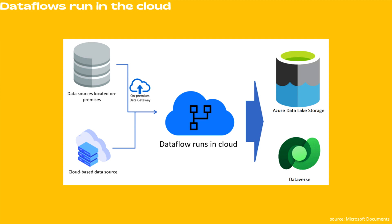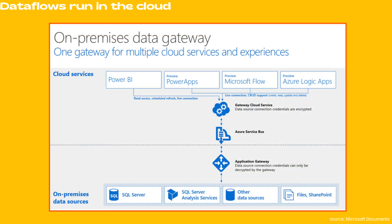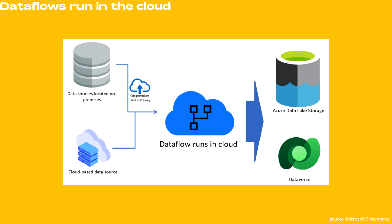Data flows run in the cloud. When a data flow is authored and saved, its definition is stored in the cloud, and it also runs in the cloud. However, if a data source is on-premise, an on-premise data gateway can be used to extract the data to the cloud. When a data flow run is triggered, the data transformation and computation happens in the cloud, and the destination is always in the cloud — either your Dataverse or Azure Data Lake Storage.